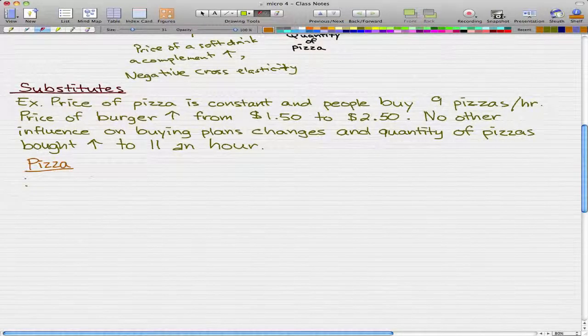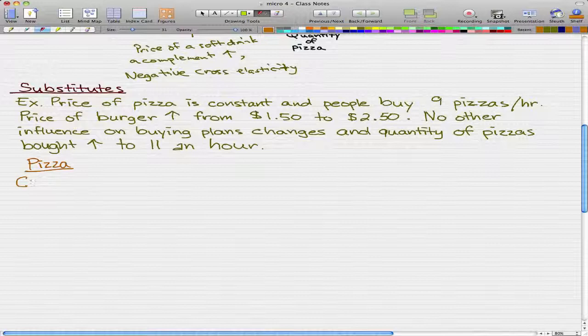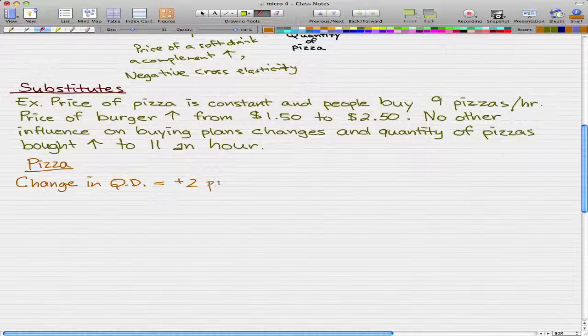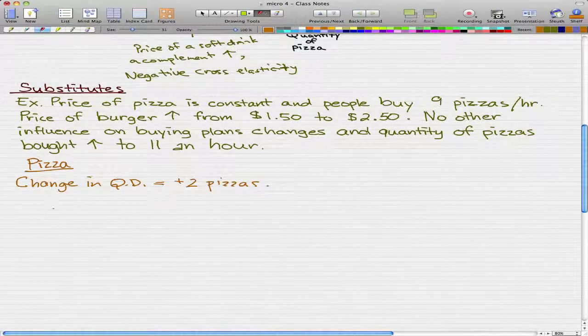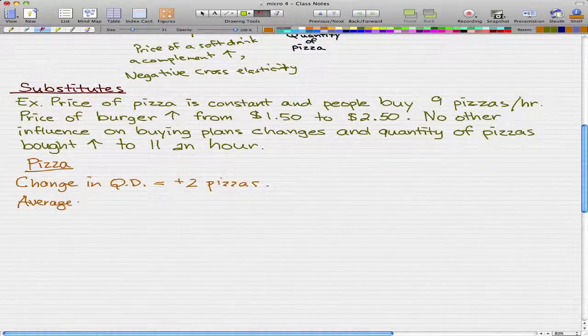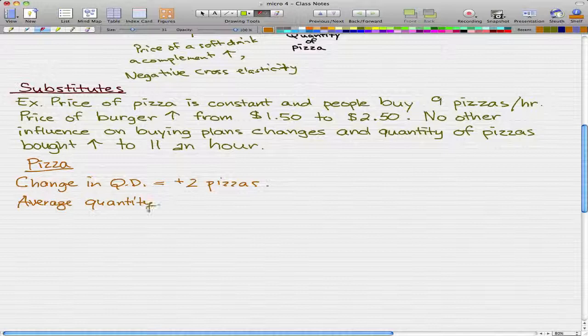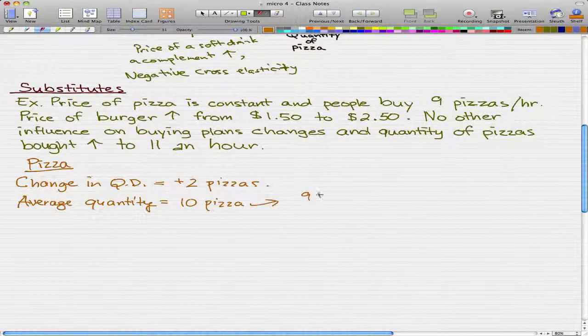Let's take a look at the pizza side. For the pizza, the change in quantity demanded is 2 pizzas because we went from 9 pizzas an hour to 11 pizzas an hour. The average quantity is 10 pizzas, and how I got 10 is we just took 9 pizzas and added to 11 and then divided by 2.